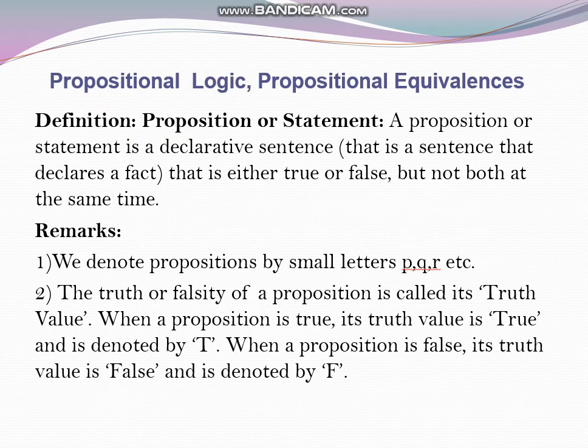Let us see the definition first. A proposition, which we also call a statement, is a declarative sentence — a sentence that declares a fact — that is either true or false but not both at the same time. We denote propositions by small letters P, Q, R. The truth or falsity of a proposition is called its truth value. When a proposition is true, its truth value is true, denoted by T; when false, it is denoted by F.